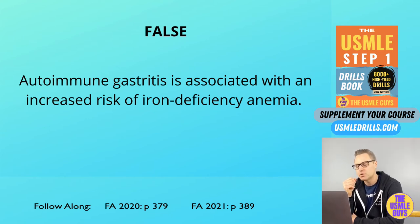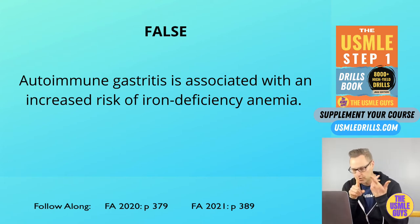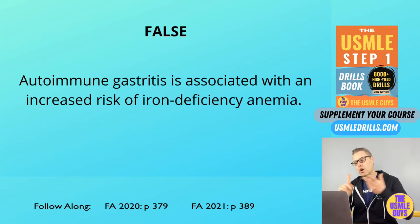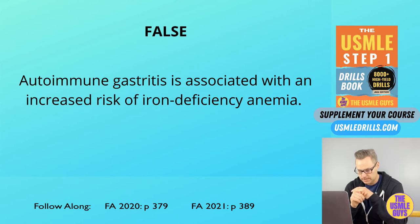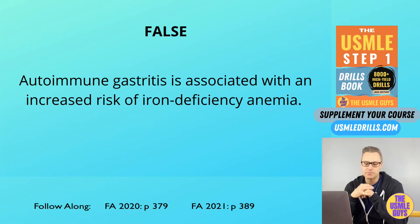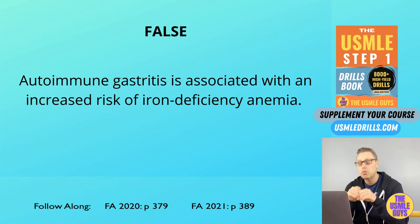If the cancer is intestinal type, it's associated with H. pylori and the intake of nitrosamines. Nitrosamines are created when we smoke foods — meaning smoking as in the cooking method. Other possible risk factors include tobacco smoke, chronic gastritis, and achlorhydria. It's commonly found on the lesser curvature of the stomach and will look like ulcers with raised margins. Diffuse cases are not associated with H. pylori but rather with a mutation of E-cadherin, and are associated with classic signet ring cells — mucus-filled cells with nuclei pushed to the periphery.